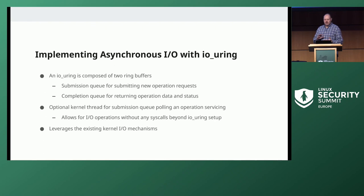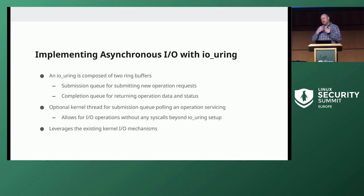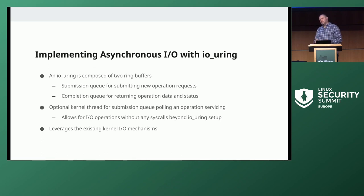IOU Ring is really a thin layer designed to replace the syscall layer for I/O operations — it's not intended to replace all existing kernel mechanisms. For file I/O it leverages all of the existing VFS and file and device infrastructure. It doesn't duplicate any of that. So it's more or less the same code path as open, read, write — it just replaces that syscall layer and its overhead. You'll get a lot of the same behaviors as traditional synchronous calls.